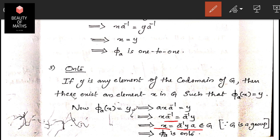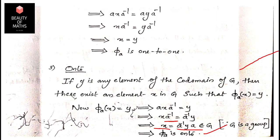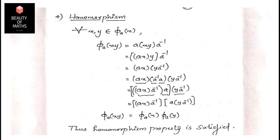That means x is the pre-image of y, and φ_a is onto. Therefore φ_a is one-to-one and onto, establishing bijectivity. Now we prove the homomorphism property: for every x, y belonging to G, φ_a(xy) = φ_a(x) · φ_a(y).